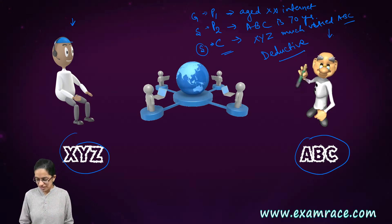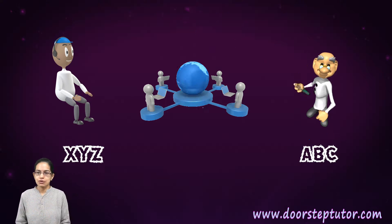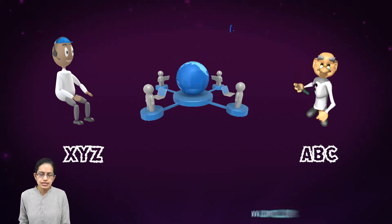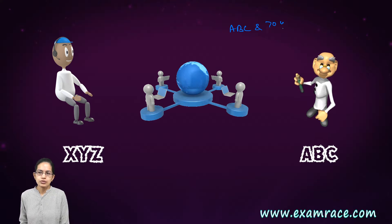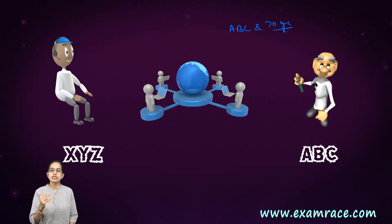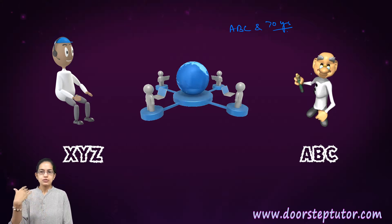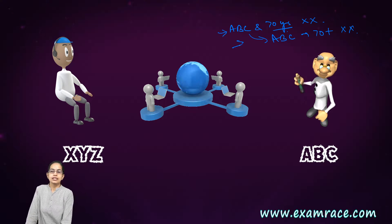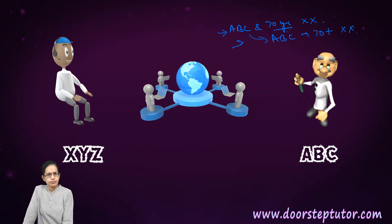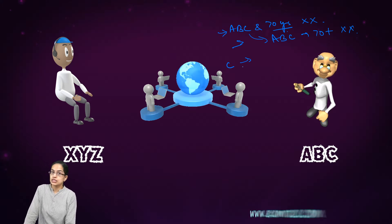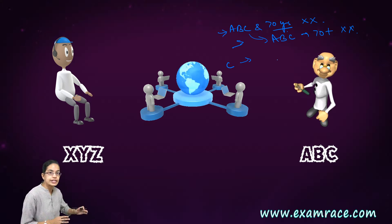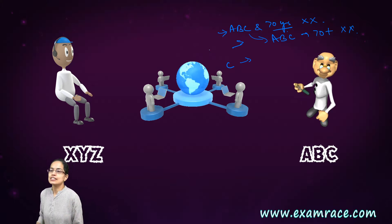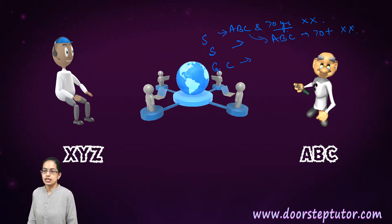With the same format, let's understand the inductive approach. ABC and his friends, all above 60–70 years, are not users of the internet. ABC himself, who is 70 plus, is not well versed with the internet, and his friends of the same age are also not users. These are two specific premises, and from them we draw a generalized conclusion: all people who are 70 plus are not well versed with using the internet. This is moving from specific to general — an inductive approach.